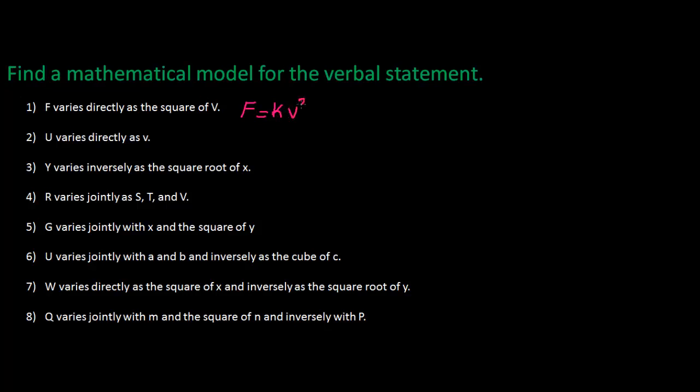For number two, U varies directly as V, so U equals K, V varies directly. And when it says varies directly, that means it's a linear function, so all the variables are in the numerator.